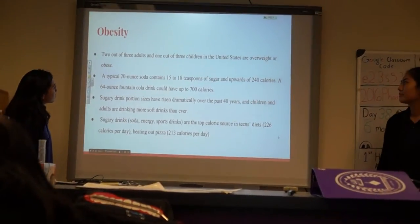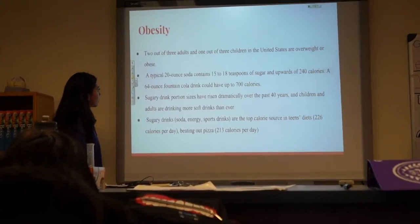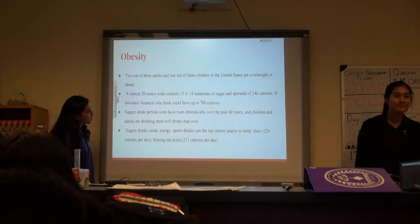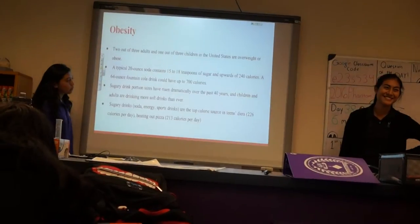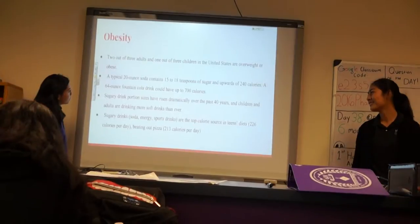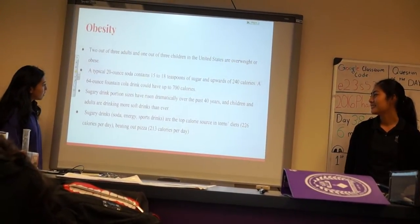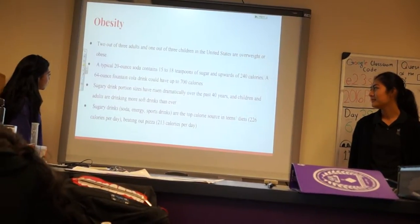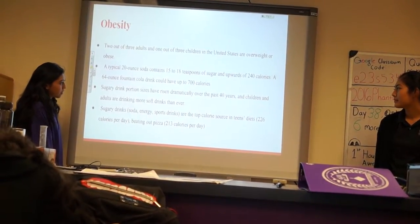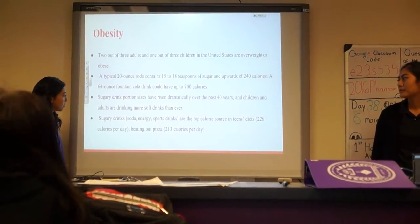Two out of three adults and one out of three children in the U.S. are overweight or obese. The typical soda contains 15 to 18 teaspoons of sugar and an average of 240 calories. A 54-ounce fountain drink can have up to 700 calories. Sugary drink portions have risen dramatically over the past 40 years, and children and adults are drinking more soft drinks.